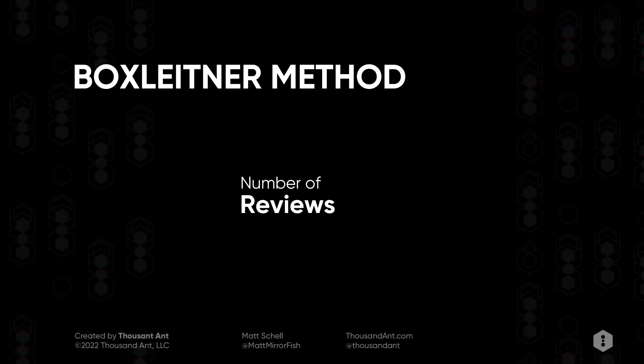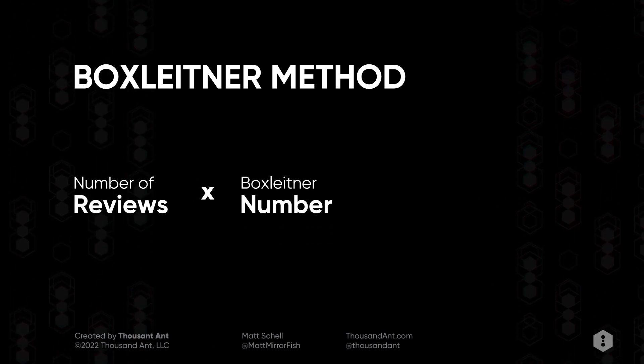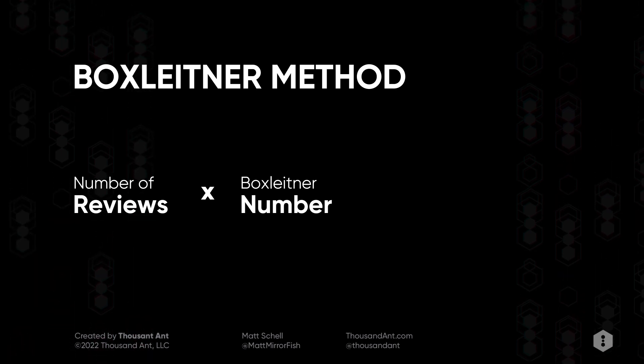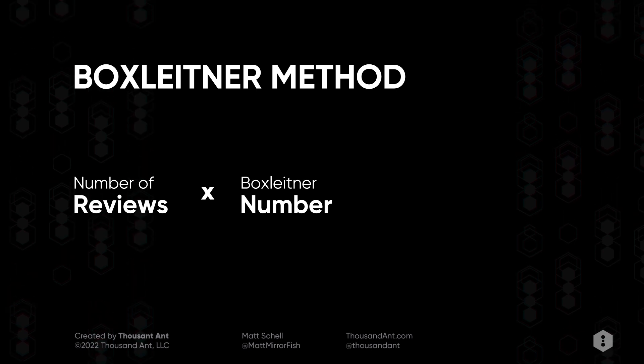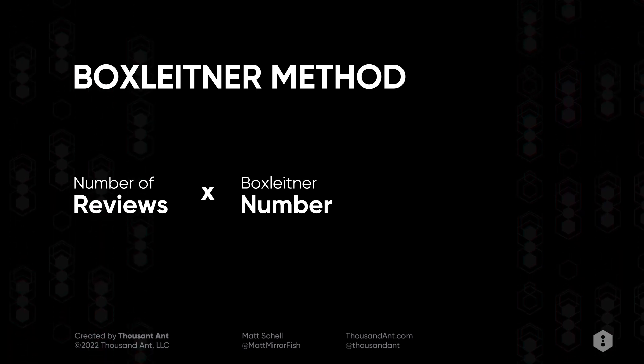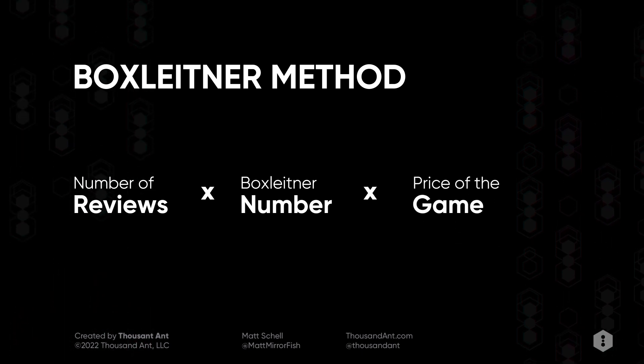The Box Slider method is a method of looking at the number of Steam reviews — which is public information — multiplying it by the Box Slider number, which many agree is around 50, times the price of the game. We'll generally use the launch price. So if a game costs $10 and has 10 reviews, that's 10 times $10 equals $100, multiplied by 50, meaning this game made roughly $5,000.